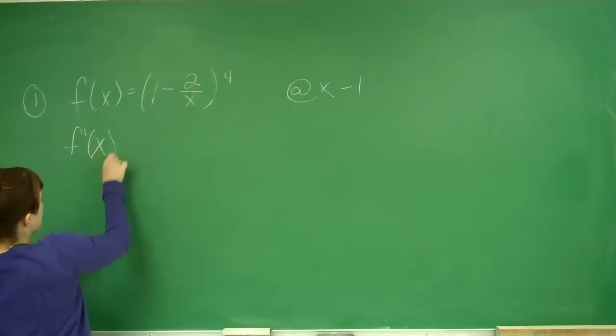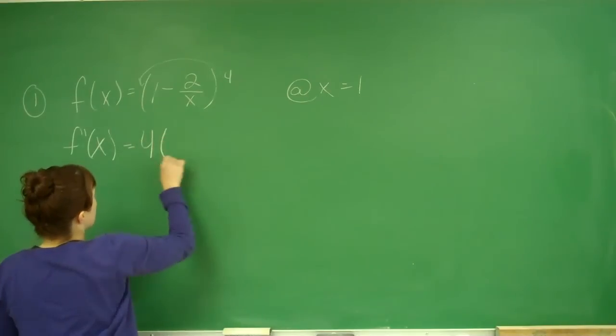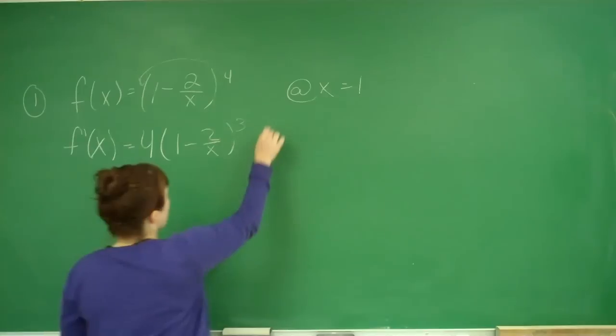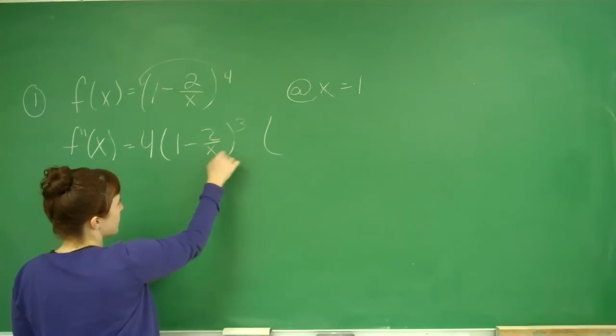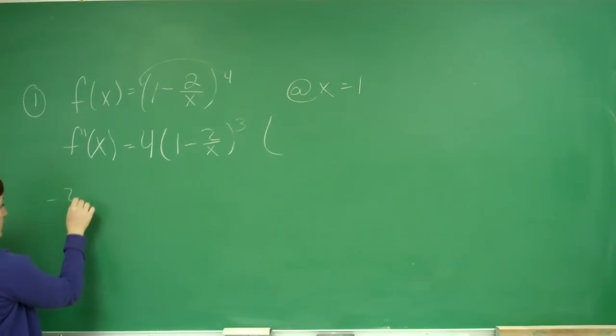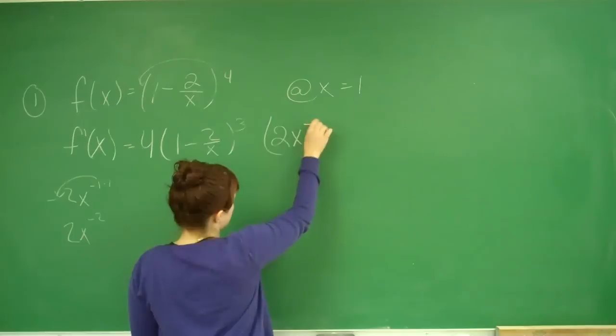f'(x) equals the derivative of the outside, which is 4(1 - 2/x)^3, times the derivative of the inside. We can think of 2/x as -2x^(-1). When we take the derivative, we have -1 times -2 which gives us 2, and subtract 1 from the exponent to get x^(-2). So this is multiplied by 2x^(-2).